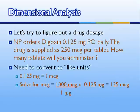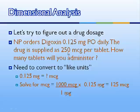Now let's look at drug dosage calculation. A nurse practitioner orders digoxin 0.125 milligrams PO daily. The drug is supplied as 250 micrograms per tablet. How many tablets would you administer? First, we need to see that we have milligrams and micrograms in this problem, so we need to convert to like units. I'm going to choose to convert to micrograms for both so we don't have a decimal point, but you could just as easily change both to milligrams.